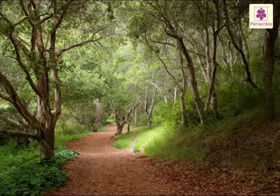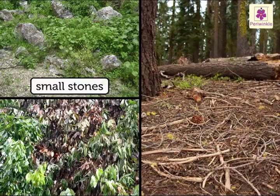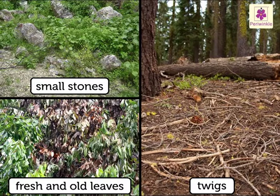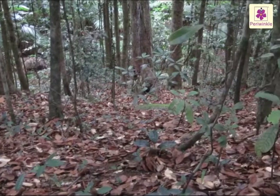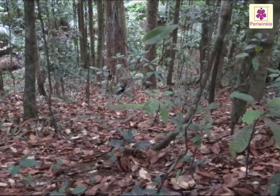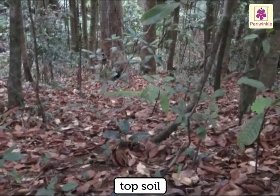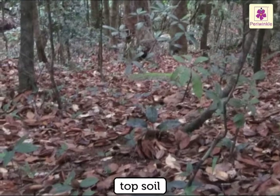Let us look at a forest floor to get an idea of this delicate balance. When we look closely at a forest floor, we see small stones, fresh and old leaves and twigs all mixed together. Just under this leaf litter is the first layer of soil, called the topsoil. It is normally dark brown and full of nutrients.